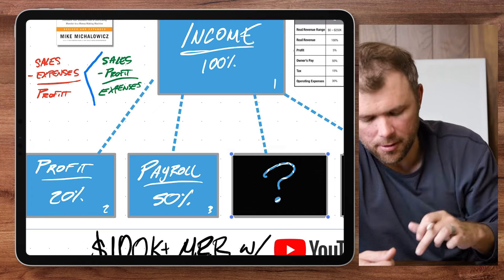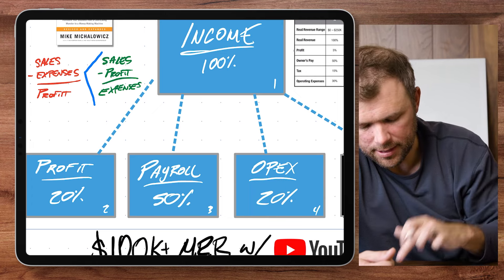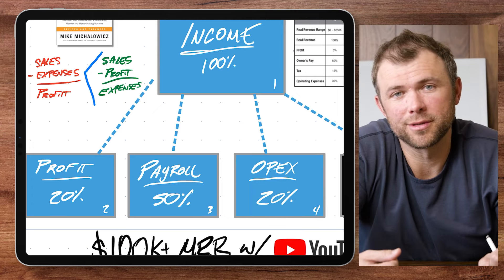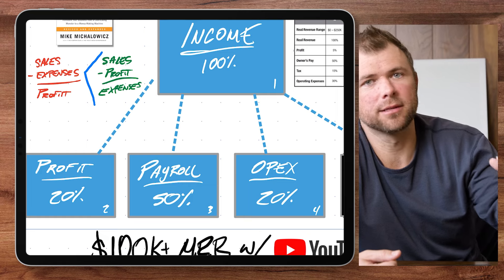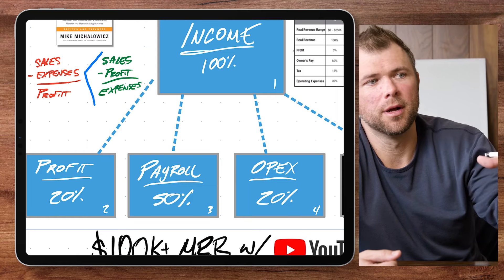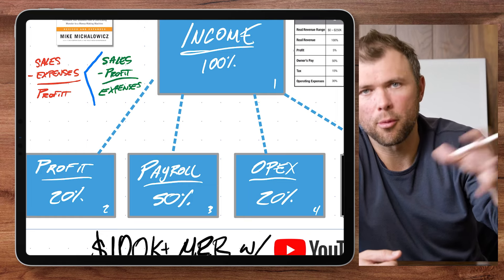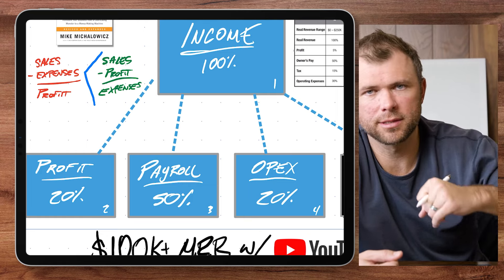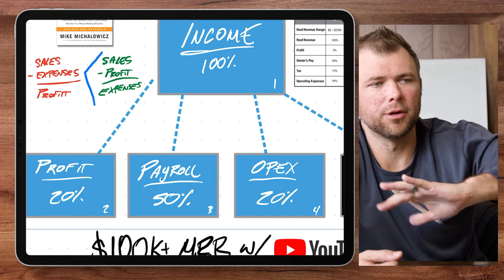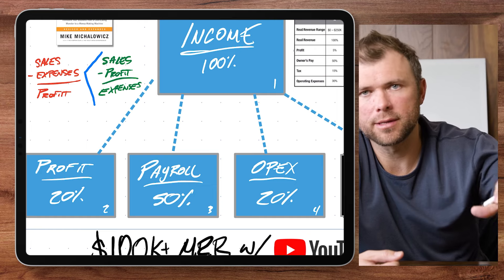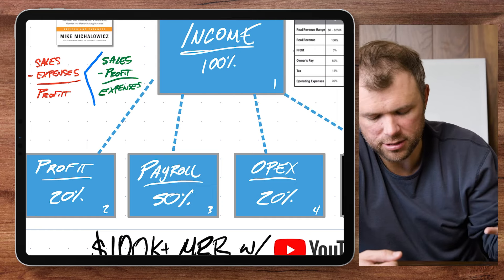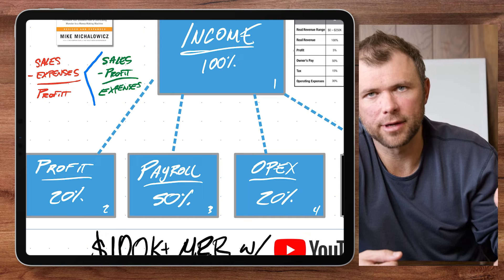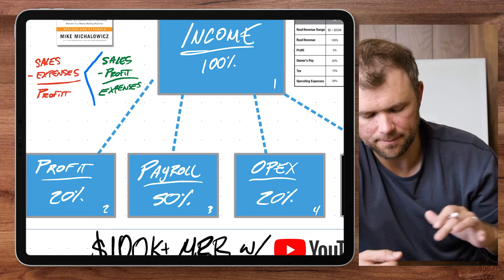Then you have your operations account. This is what it takes to operate your business — all your expenses, your rent, whatever that is. Operationally, this is all the money that's allocated towards that.